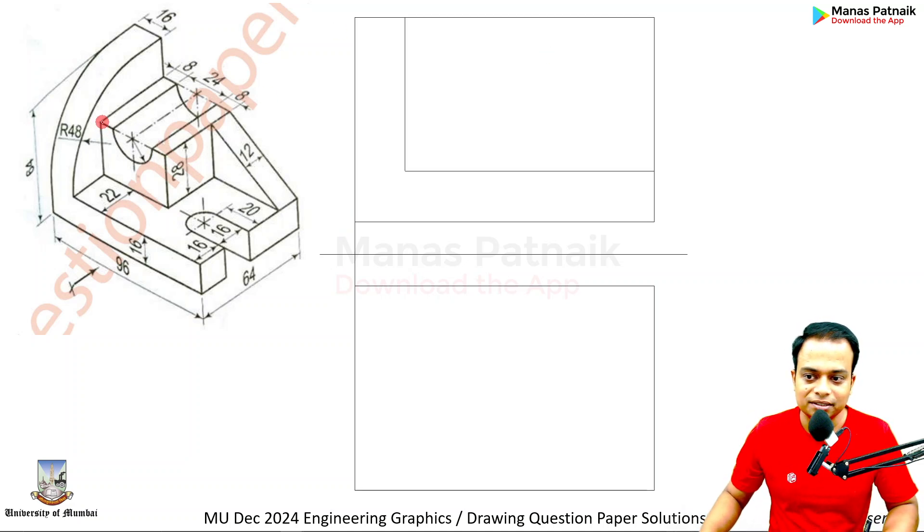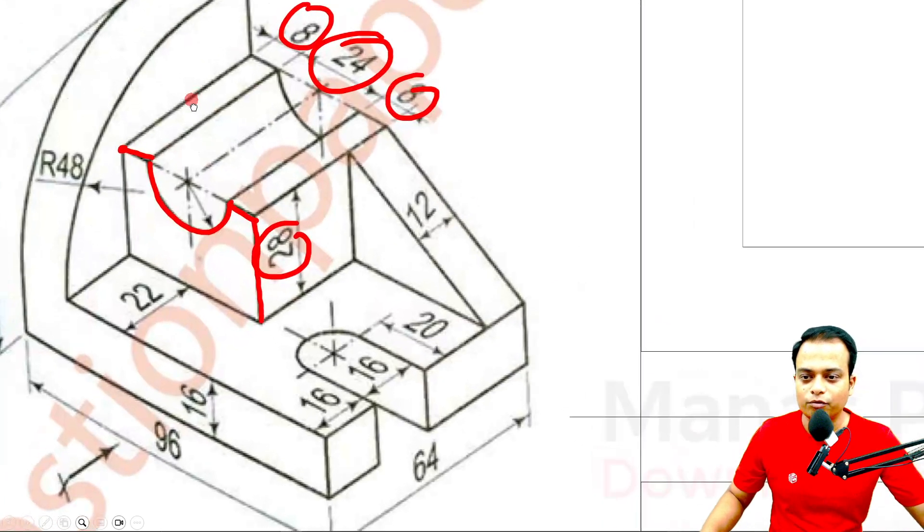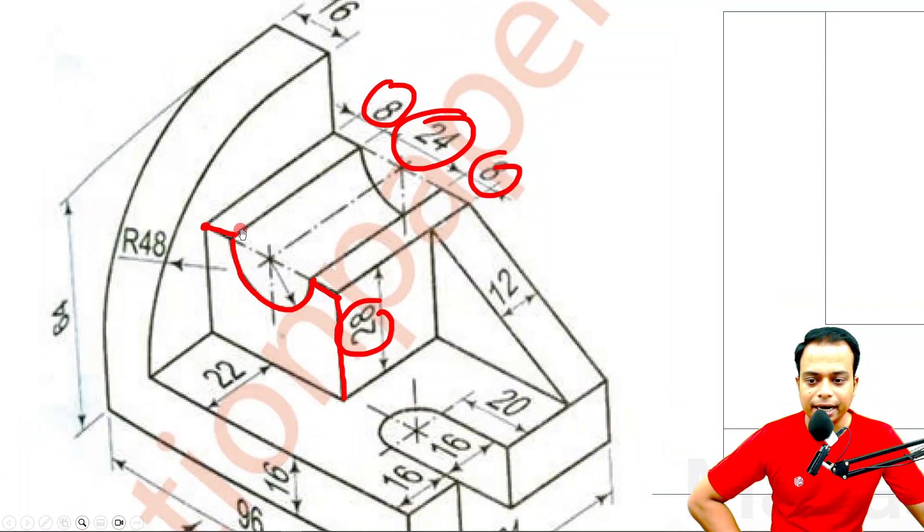Now, the next profile I'm interested in is this. Take a look: how much is this? Eight. What about the diameter of the semicircle? It is 24. What about this length of the edge? This is 8. What about this height? It's 28. So I want all of you to have a careful look: 8, 24, 8, and this height is 28.